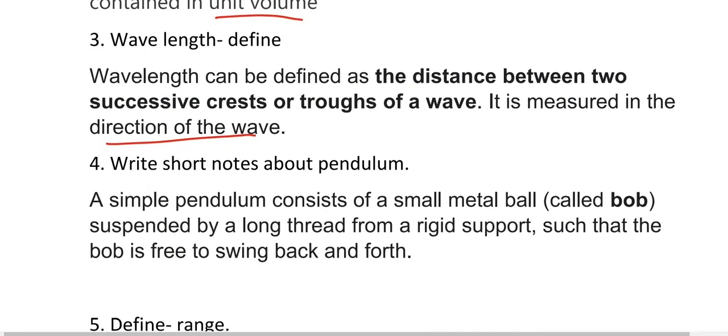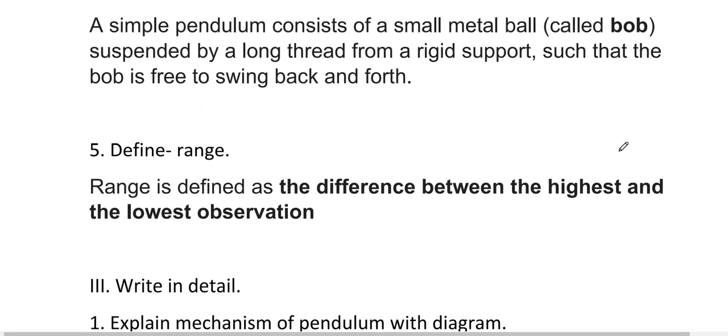Write a short note about pendulum: A simple pendulum consists of a small metal bob suspended by a long thread from a rigid support such that the bob is free to swing back and forth.